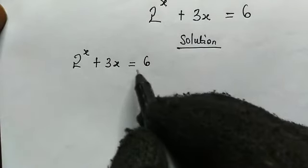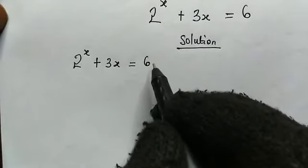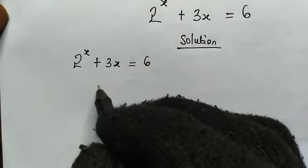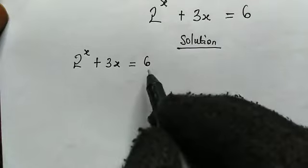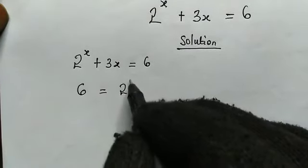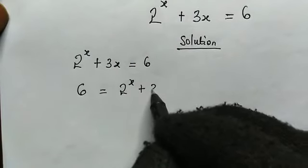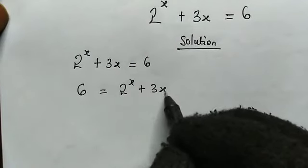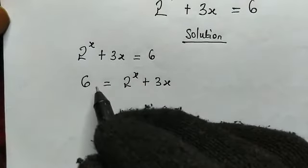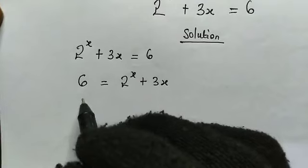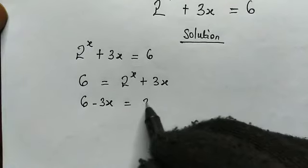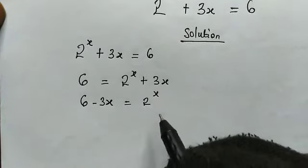Now let us make the right hand side the left hand side, and the left hand side the right hand side — that will not change the equation. So from the right we have 6, then this equals 2 to the power of x plus 3x. Now, remember this 3x is positive, so if it's crossing over it will become negative. So we have 6 minus 3x, this equals 2 to the power of x.